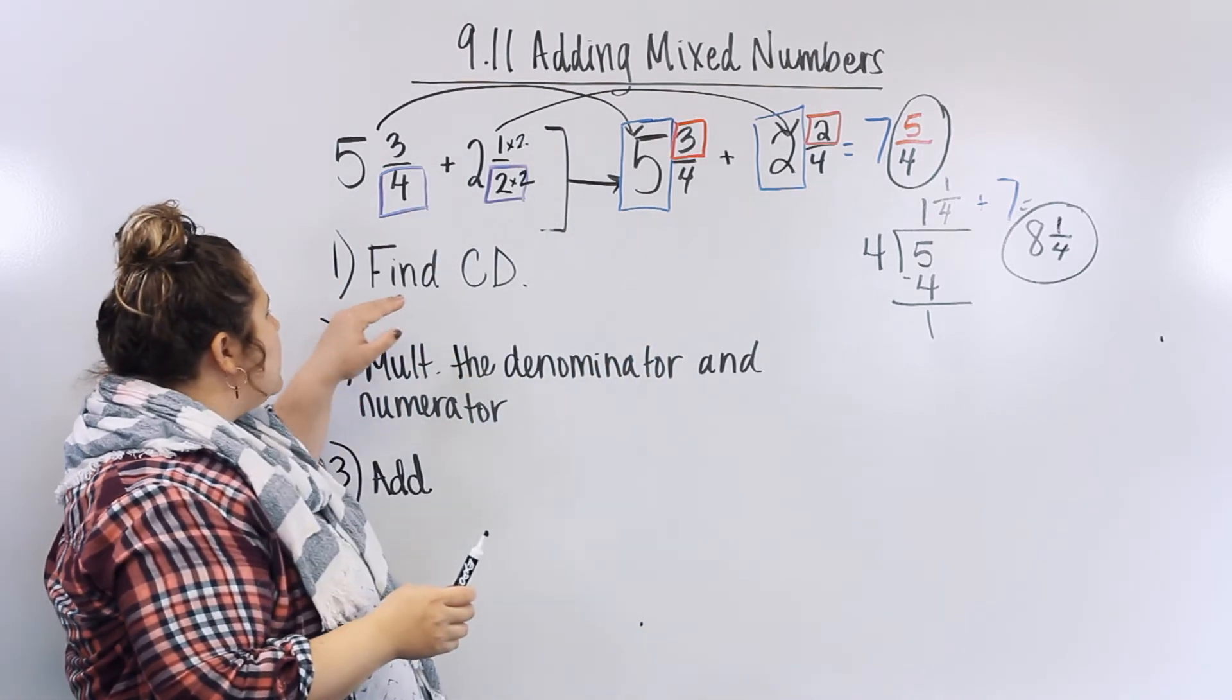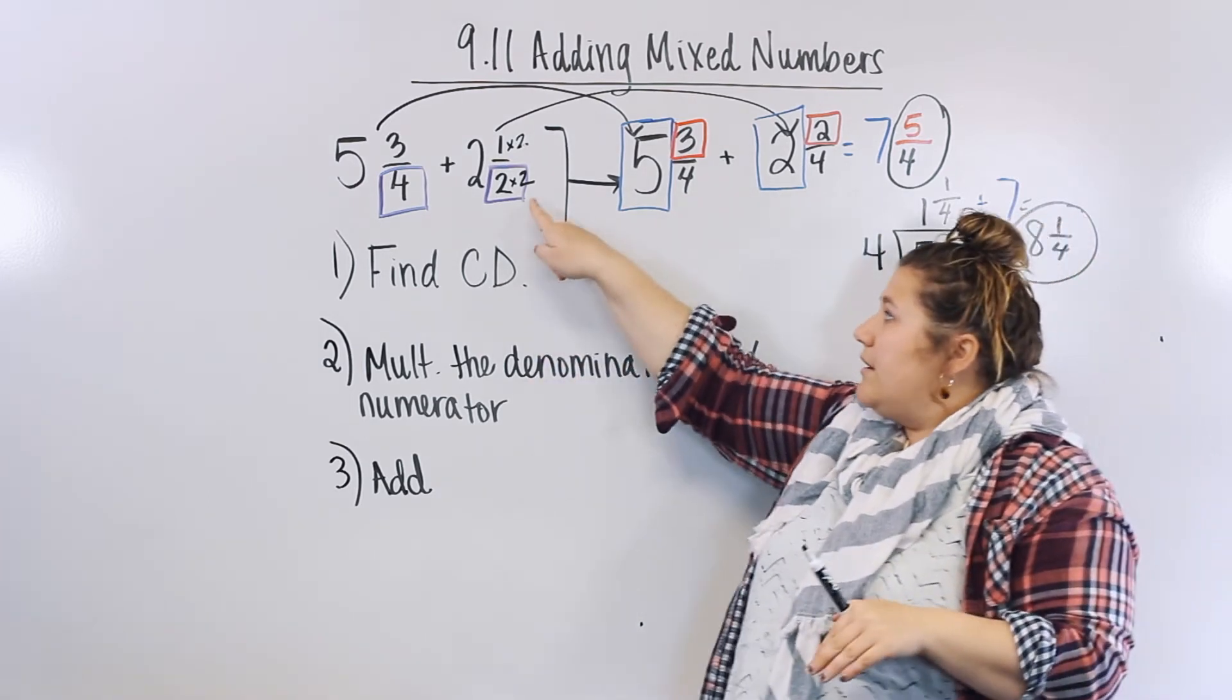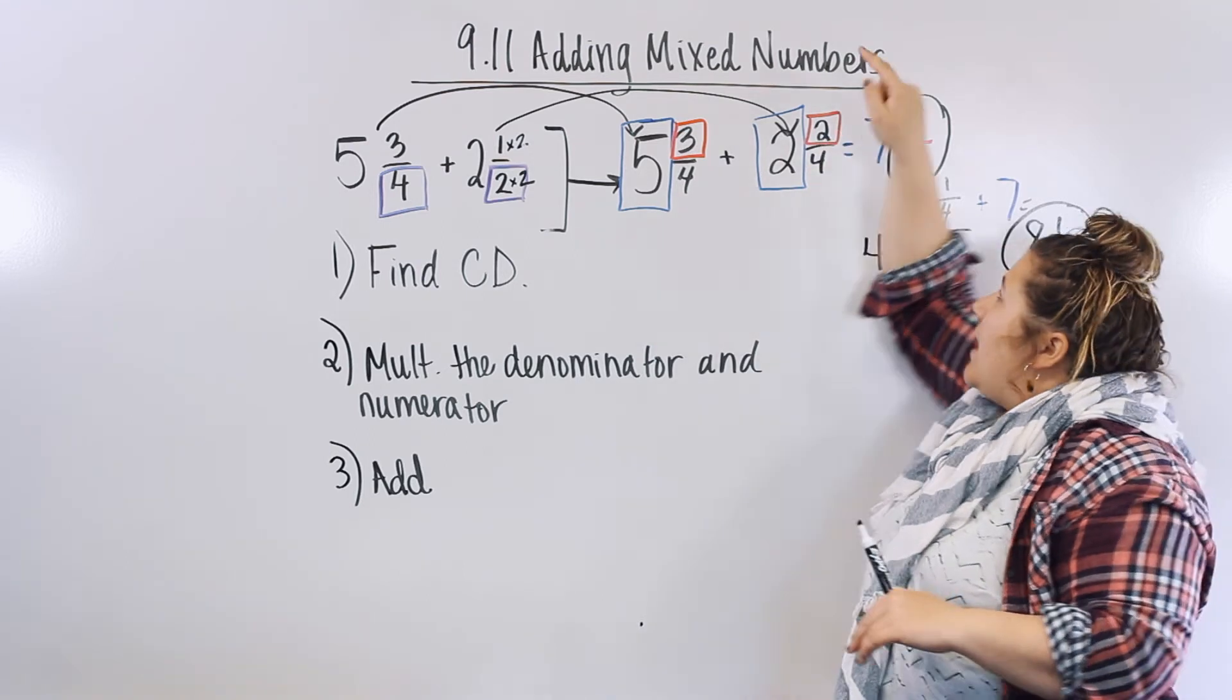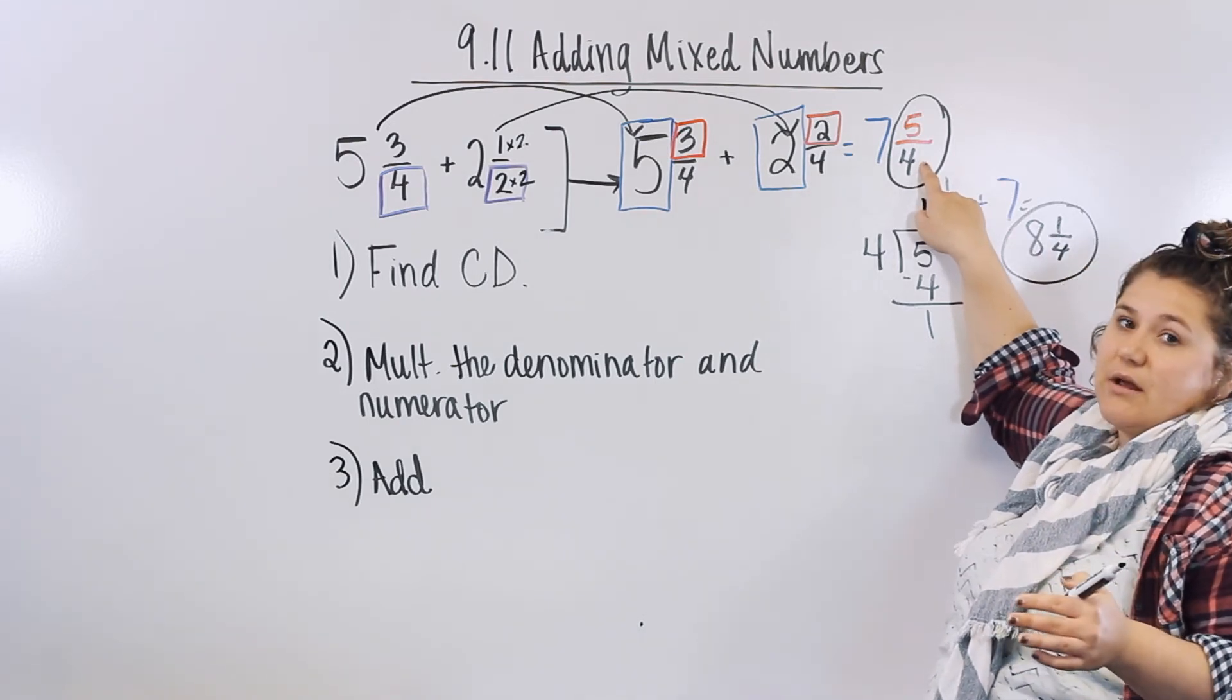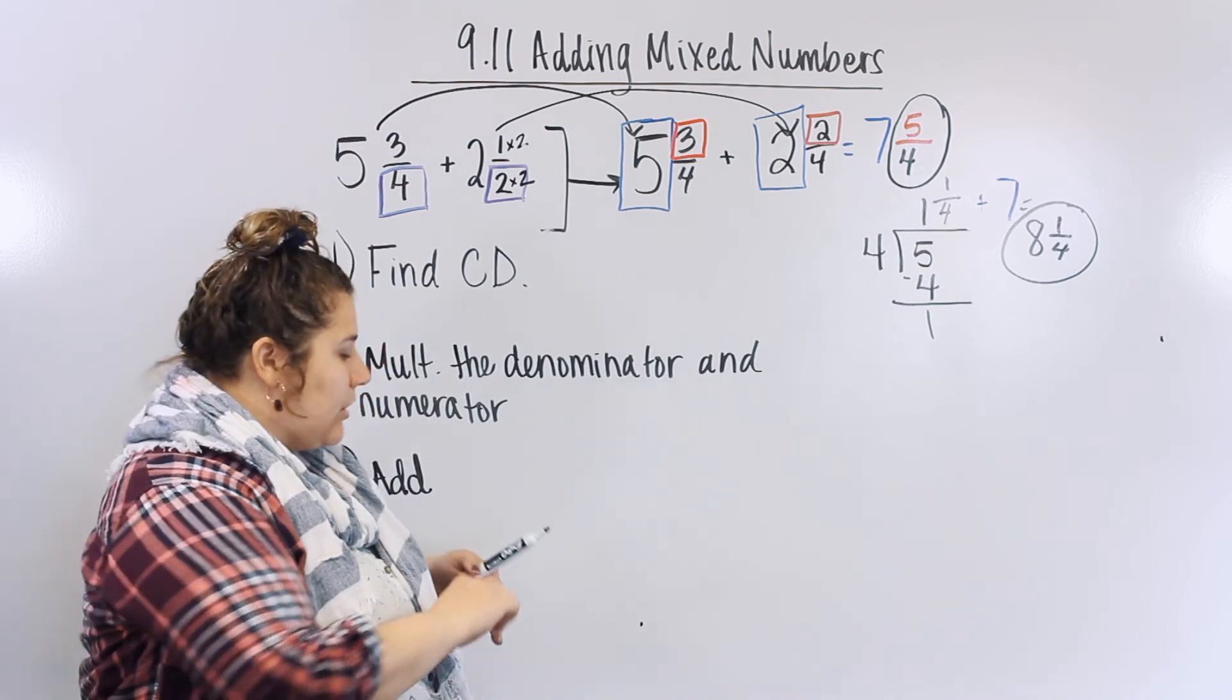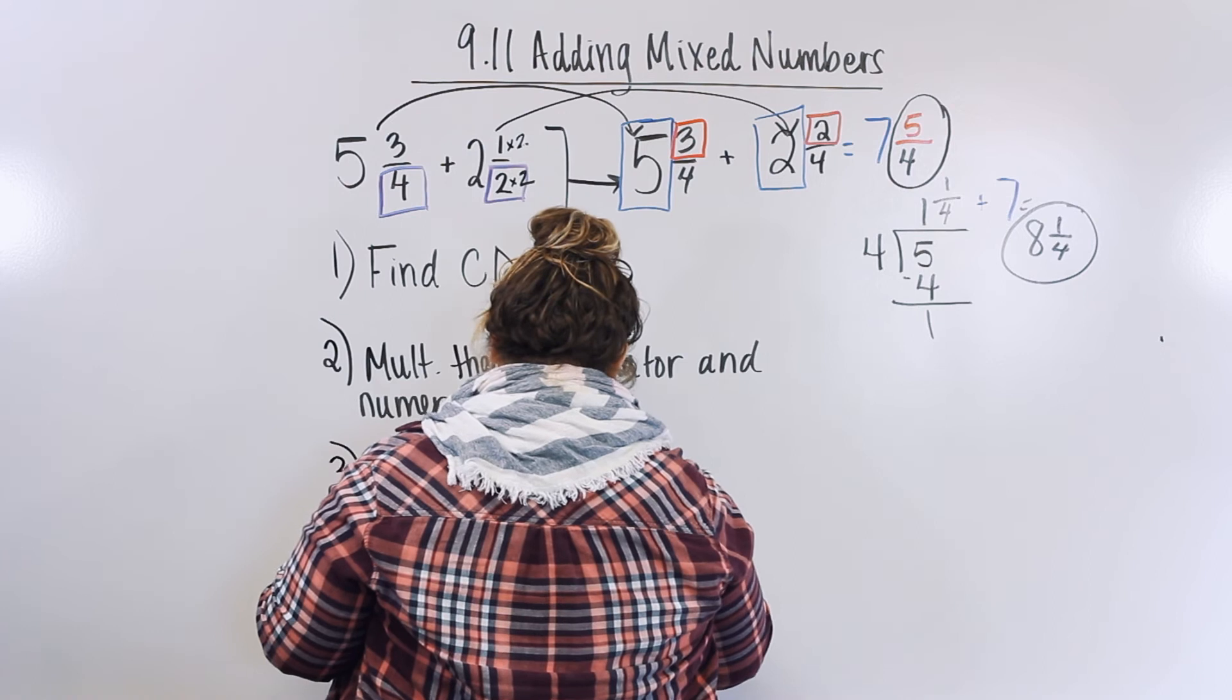So not only did we first start with this number, these problems. We found the common denominator. We multiplied the denominator and the numerator, like I did right here. And then we added straight across. We added our whole numbers. We added our numerators. We got our answer. We kept our denominator. But then we figured out that our fraction was an improper fraction. And we had to change it to a mixed number.